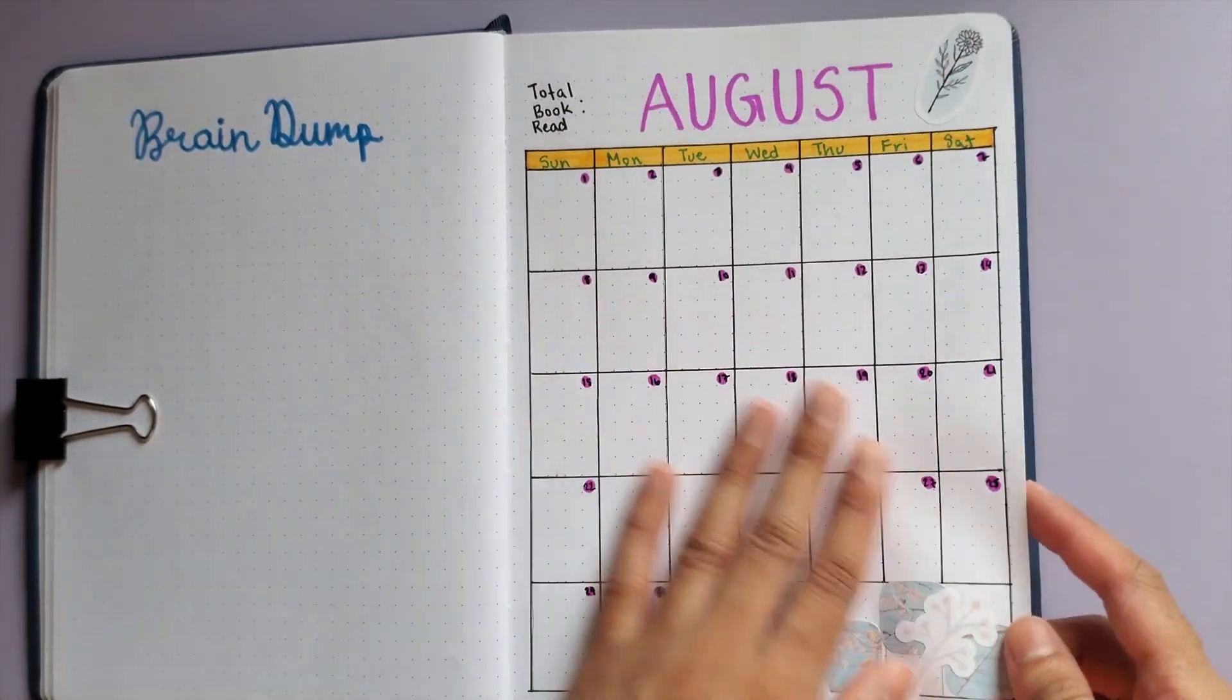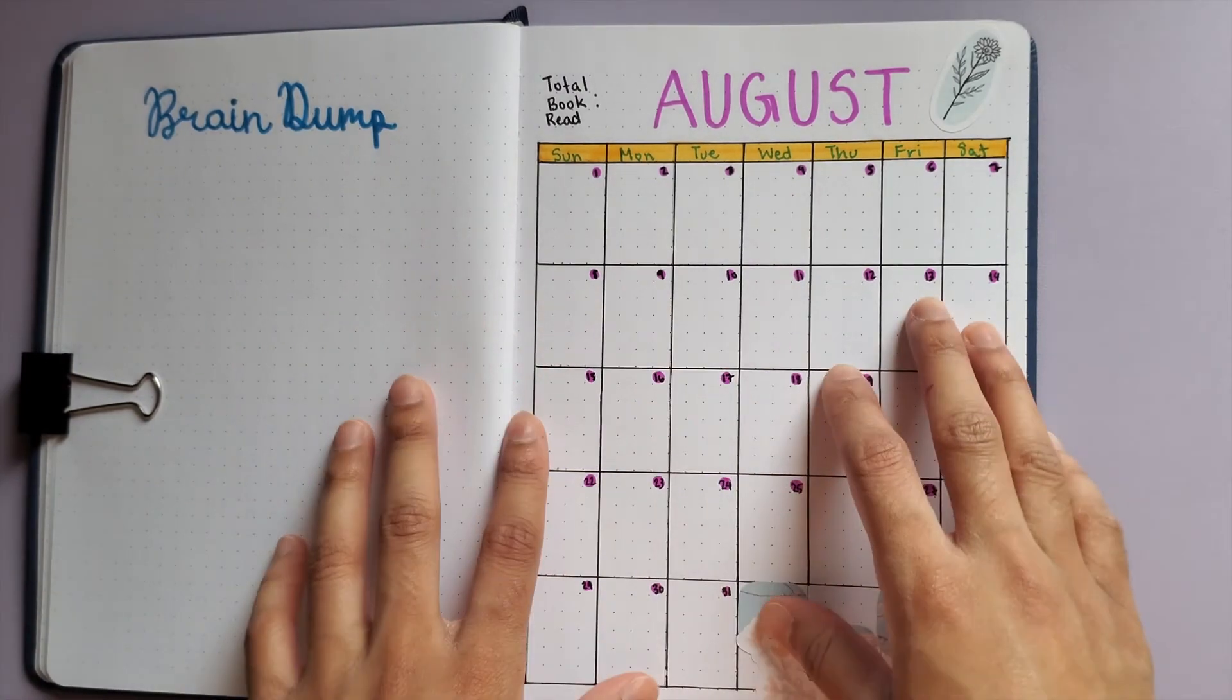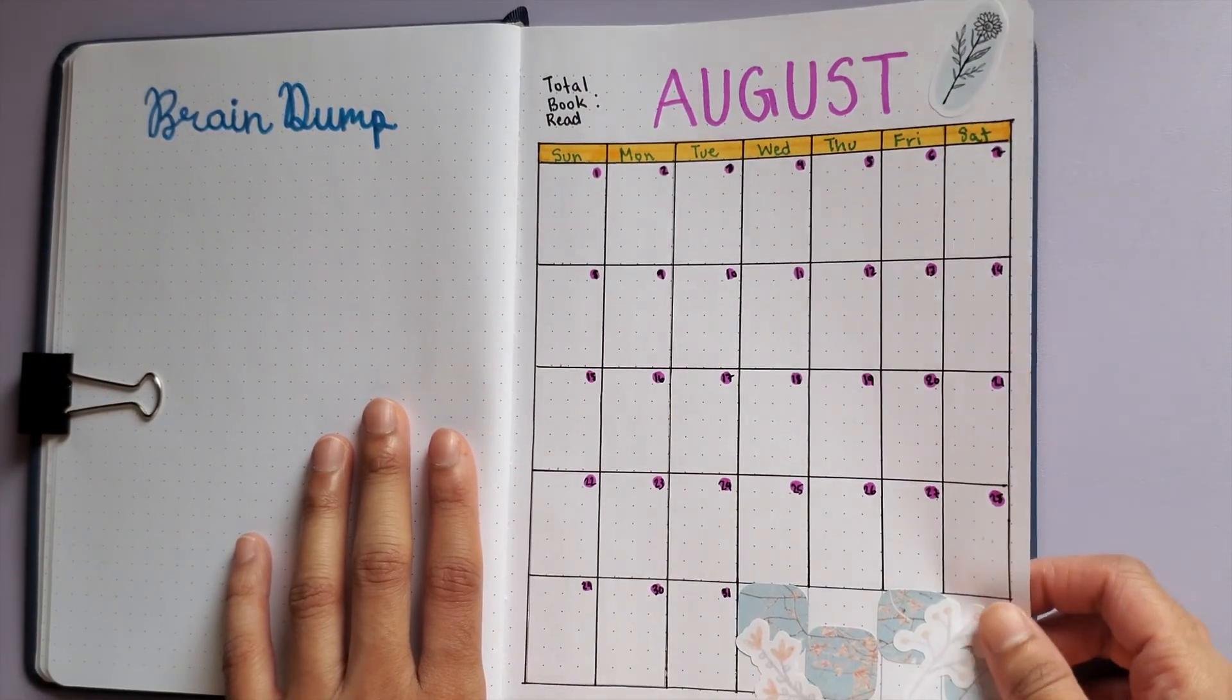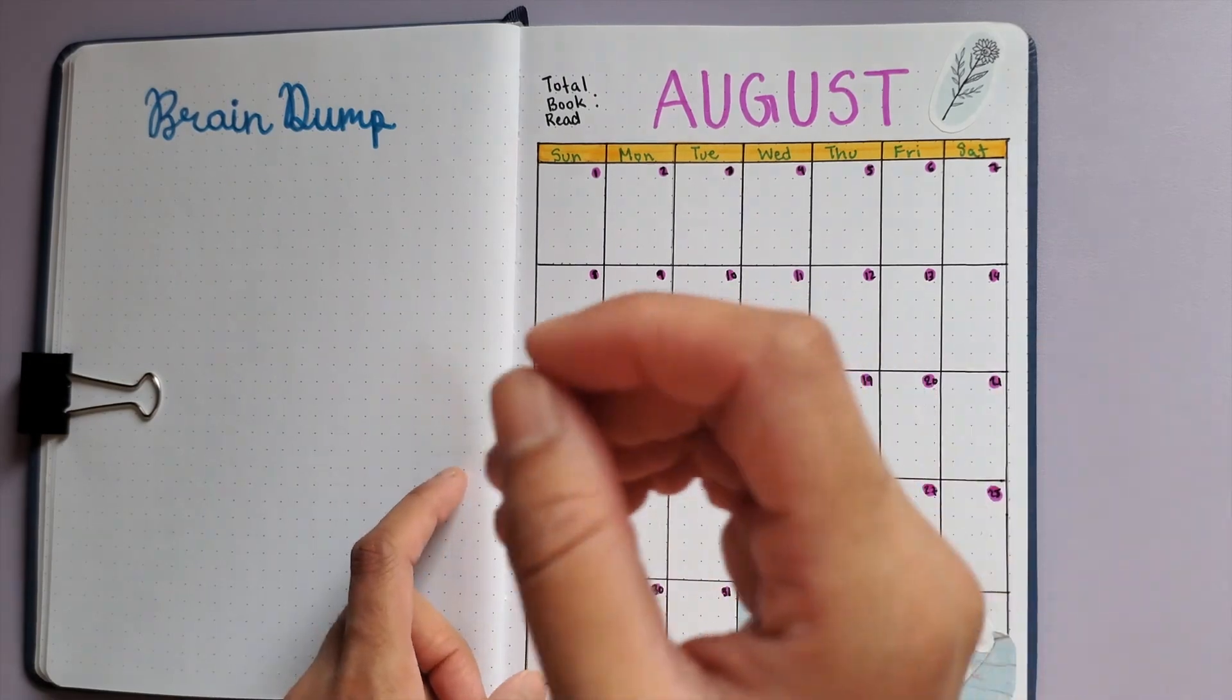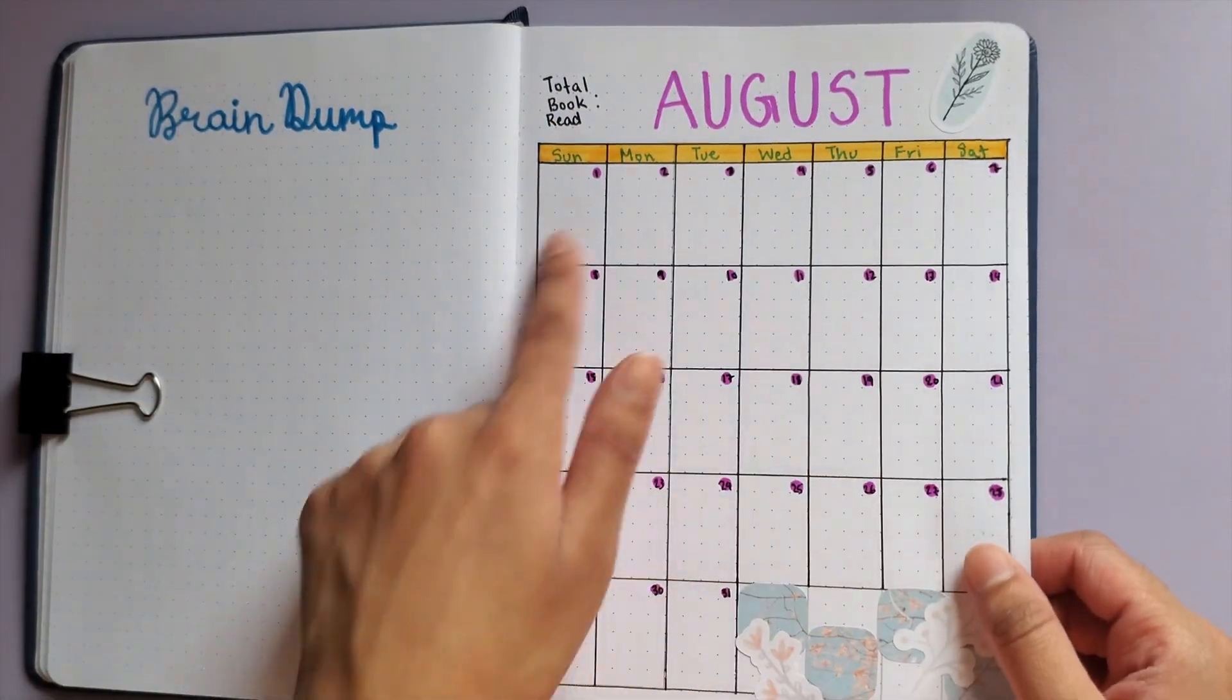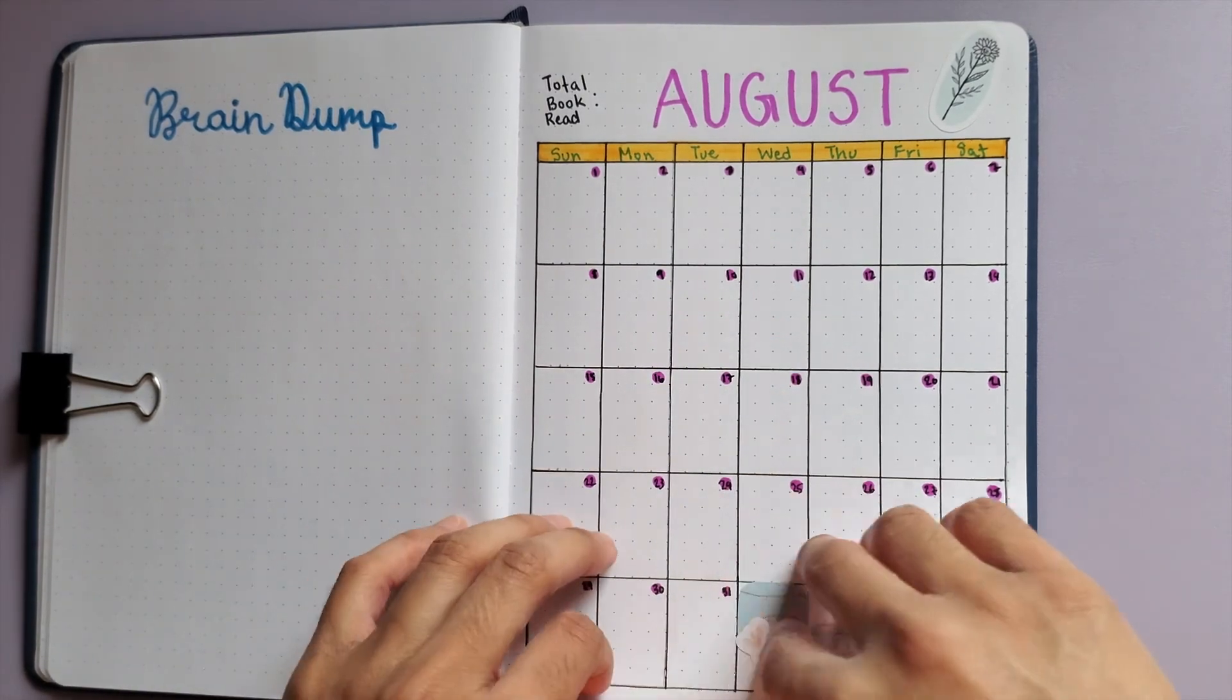Perfect, so that is my August setup. It is pretty simple because I'm not super creative. I decided not to do a cover page for this month like I did for last month. If you saw last month's reading journal plan-with-me, which will be linked here and down below, I kept it this way because of the amount of books I calculated I would read for the remaining month. I didn't want to have this blank, then the cover page, then the calendar. I prefer to have my brain dump and calendar on this spread and then immediately go into my journaling.